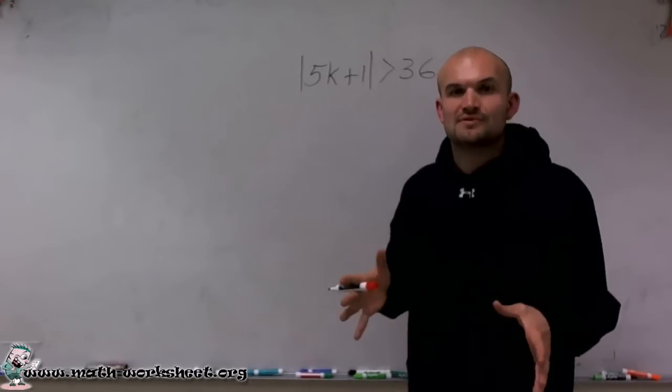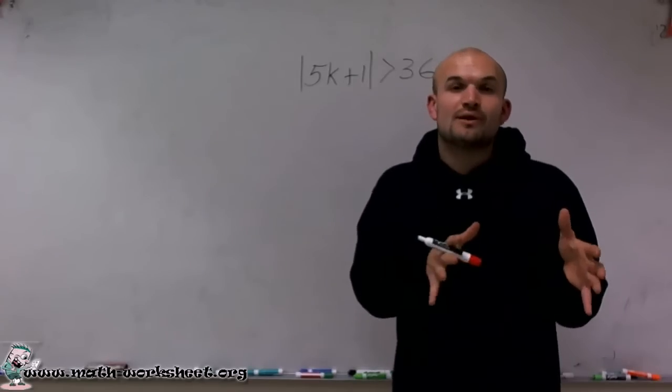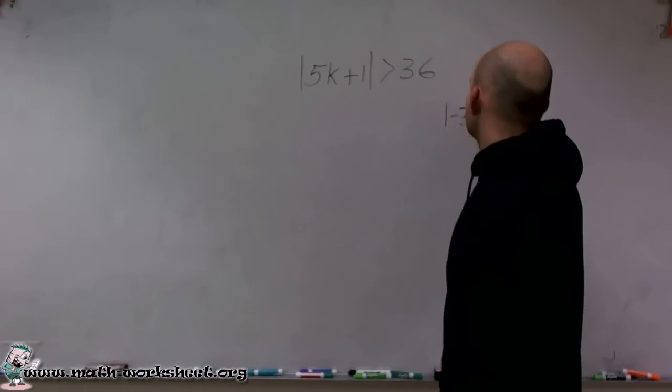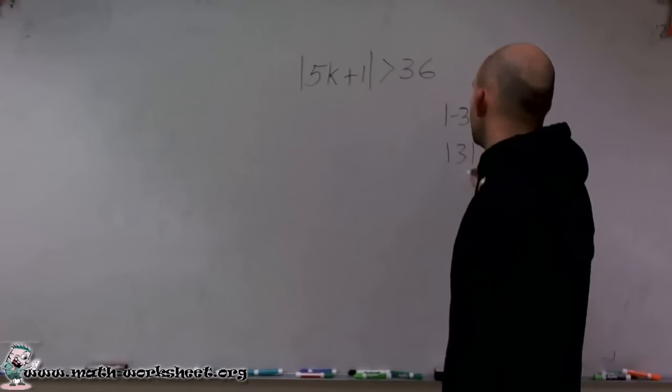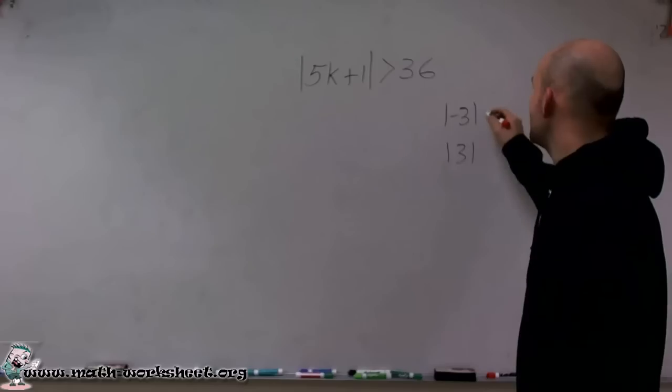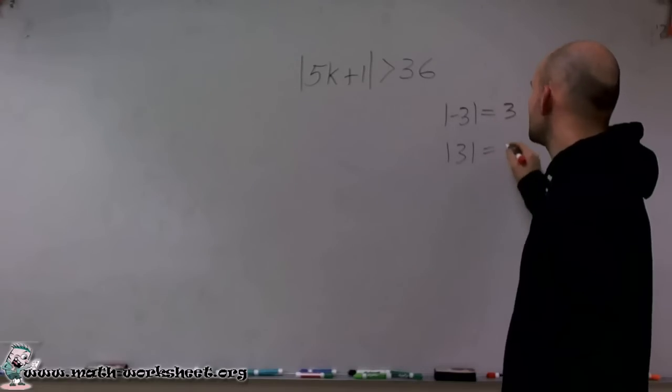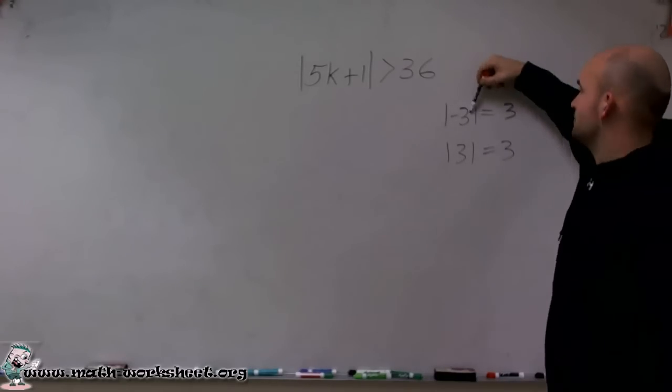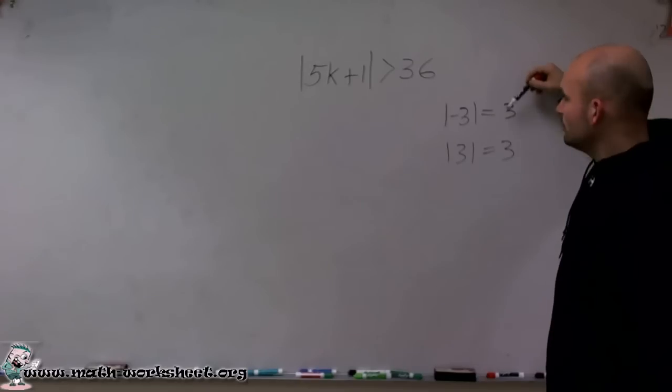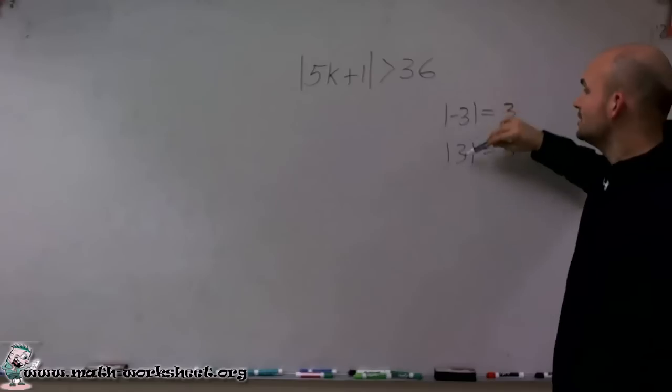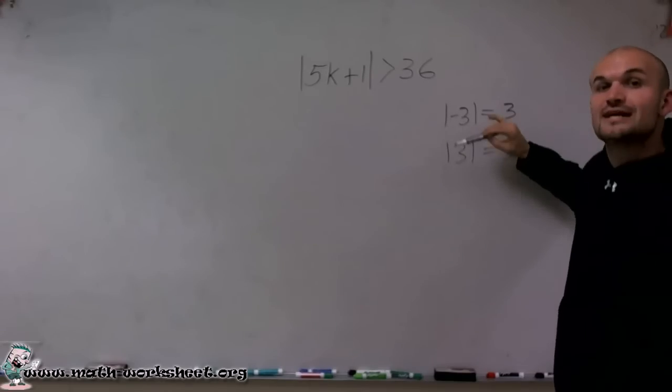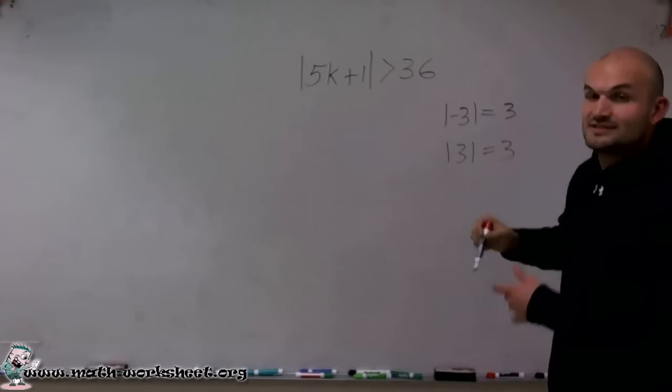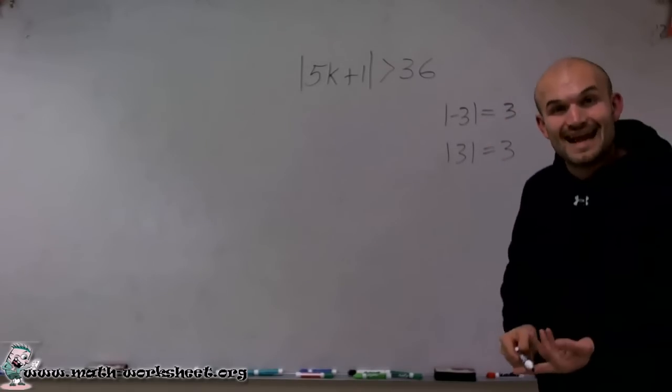Now, it's important when looking at absolute values to understand that we have pretty much two solutions that we're going to work with. And the way that I can represent that is if I looked at the absolute value of negative 3 and positive 3, we understand that both of those absolute values equal 3. So therefore, when dealing with an absolute value that equals a number, we know that there's possibility of two different solutions that could be within your absolute value function as far as the positive value and the negative value.